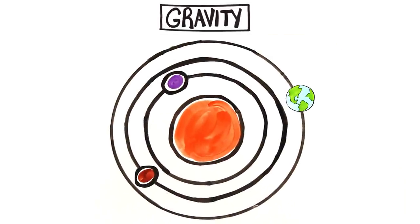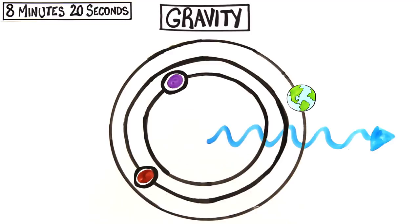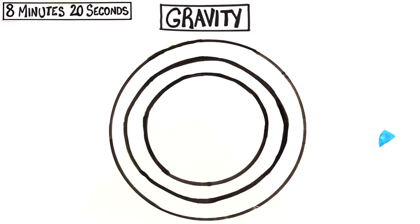Now, because gravity travels at the speed of light too, it would also take 8 minutes and 20 seconds for Earth to feel the effects of the sun's disappearance. Without the sun's gravitational pull, we'd fly out of orbit and into space.